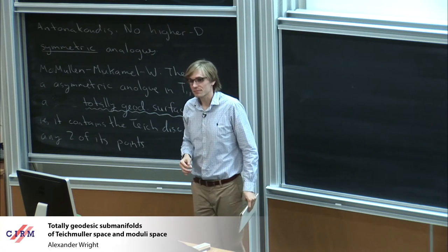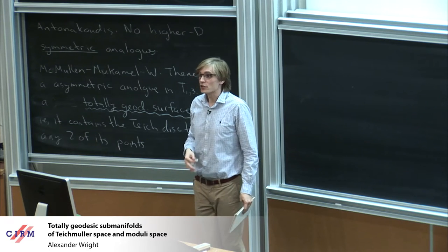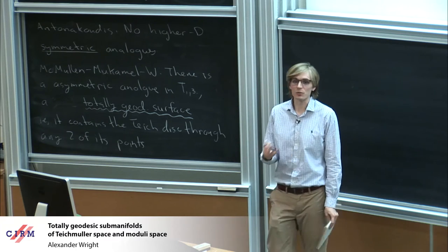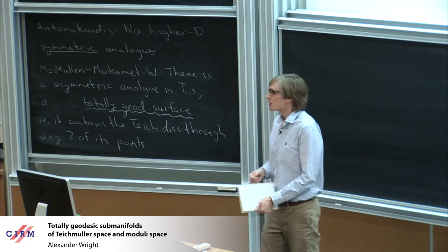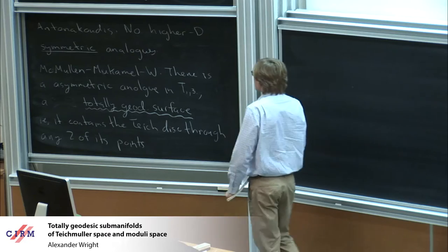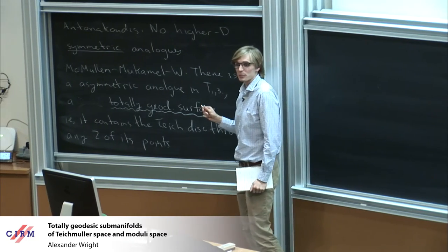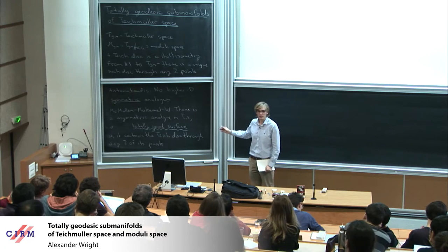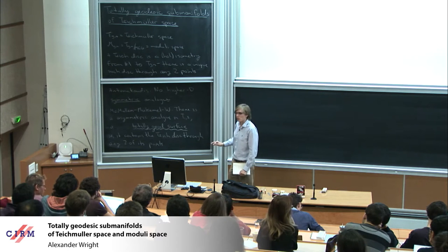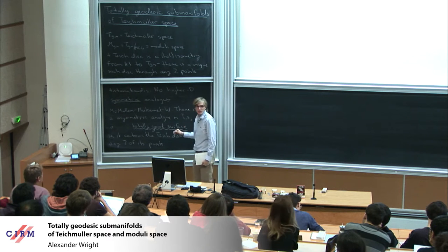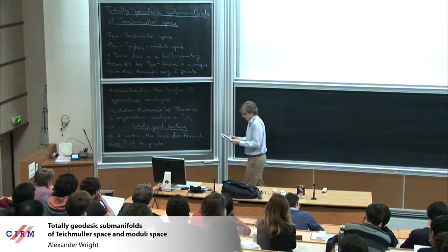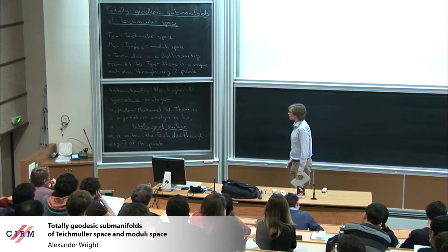It certainly has isometries coming from the mapping class group; probably no others. You should think of this as some sort of exotic Teichmüller space — in all ways similar to a Teichmüller space, but new and interesting. There are many things we know about Teichmüller spaces that we don't know about this exotic one. It naturally covers a sub-variety of M_{1,3}. You should actually think of it as a totally geodesic sub-variety of M_{1,3} that you can lift to Teichmüller space.